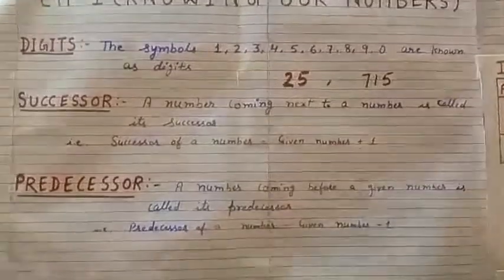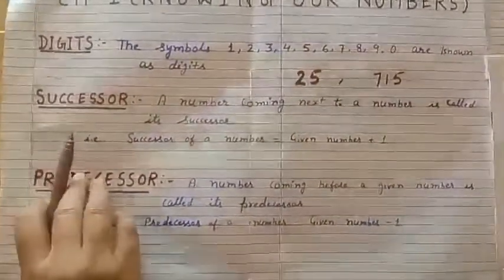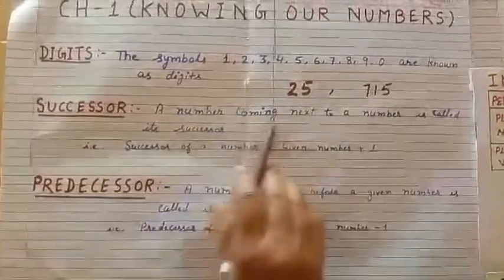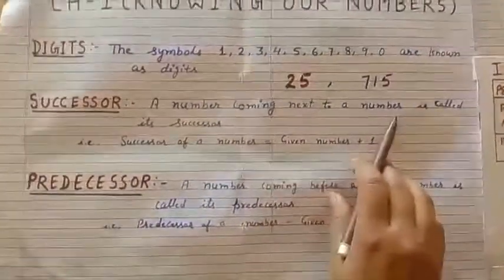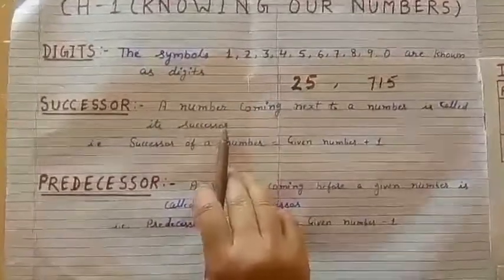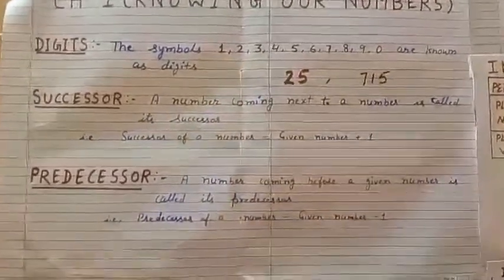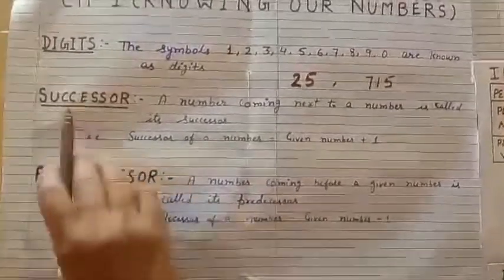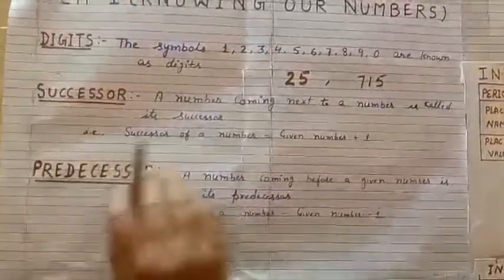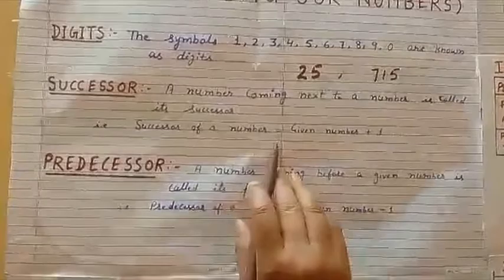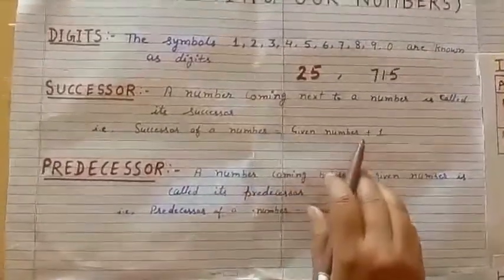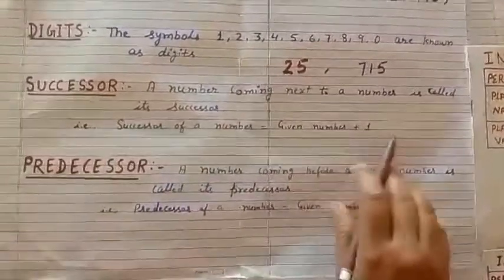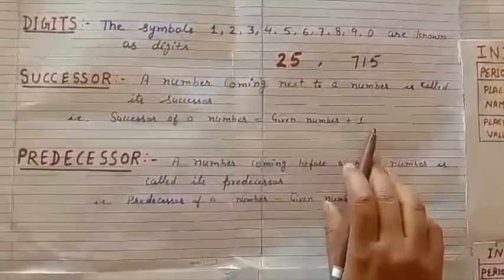The next topic is successor. A number coming next to a given number is called its successor. To find the successor of a number, we use the formula: given number plus one.